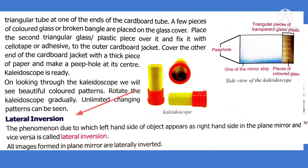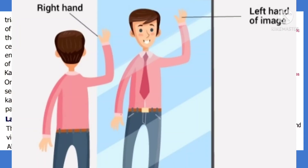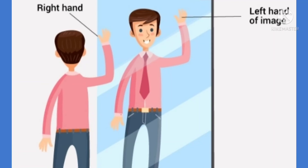Now let's move on to lateral inversion. If you stand in front of a mirror and lift your right hand, it appears as though you have lifted your left hand. Such a phenomenon — by which the left-hand side of the object appears to be the right-hand side in a plane mirror, and the right-hand side appears to be the left-hand side — is called lateral inversion.